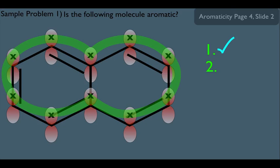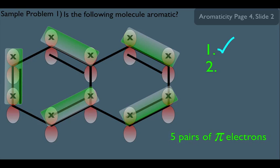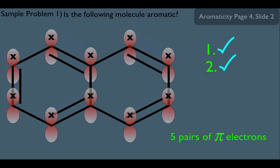Now what about the second criterion? Let's see how many pairs of pi electrons this molecule has. Here's one pair, then two, three, four, and five. We have five pairs of pi electrons. That is an odd number of pairs of pi electrons, so the second criterion is met, which means this molecule is aromatic.